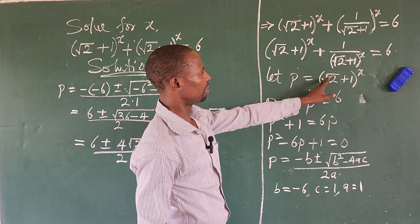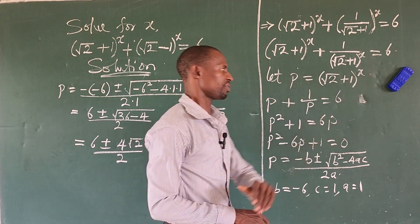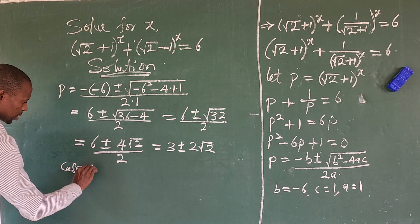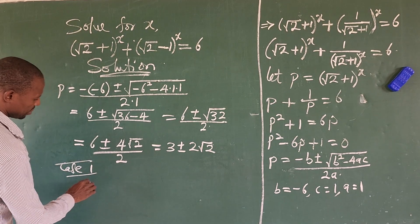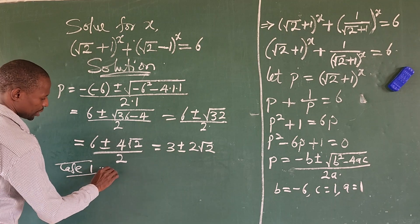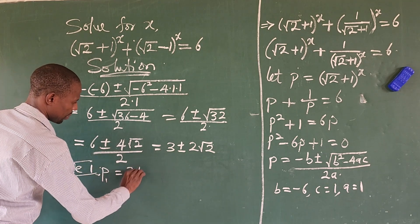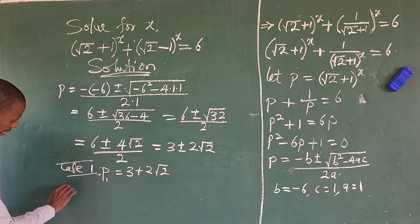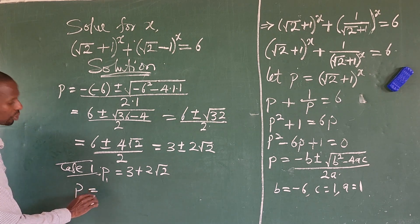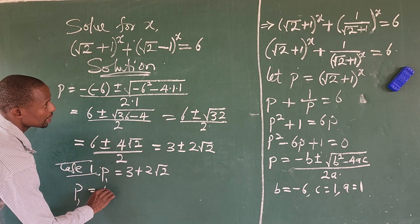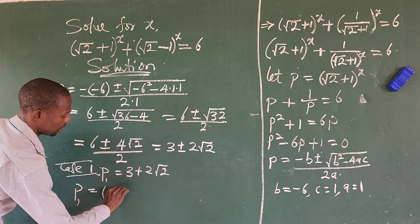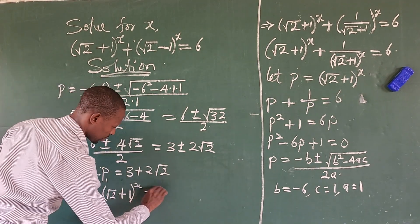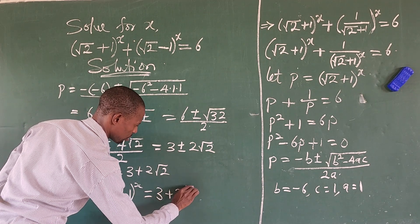Recall we said let p = (√2 + 1)^x. For Case 1, p₁ = 3 + 2√2. So we have (√2 + 1)^x = 3 + 2√2.